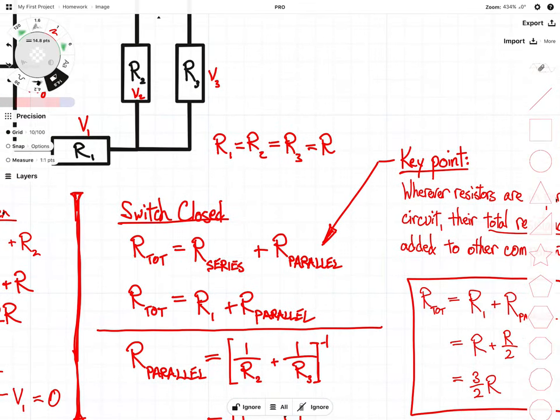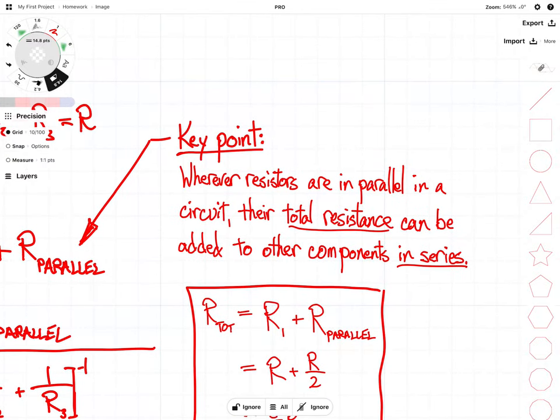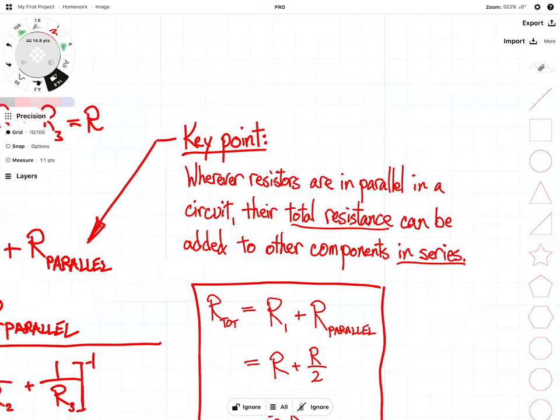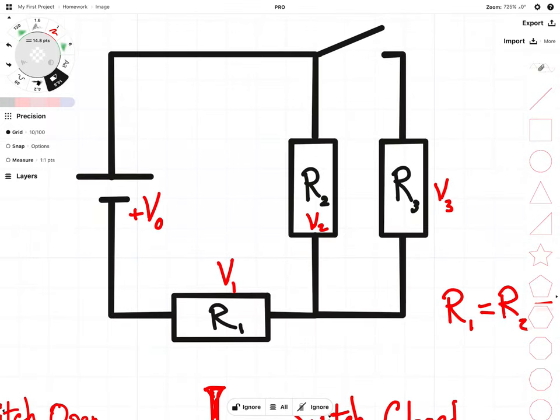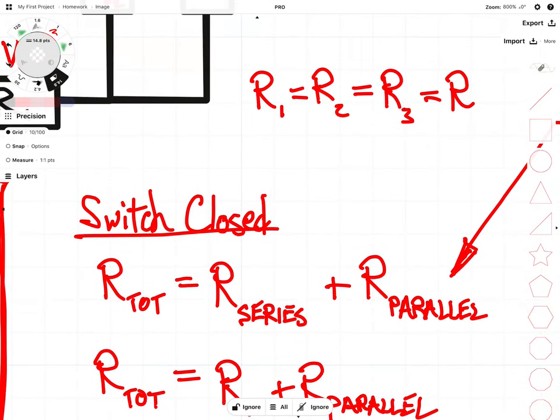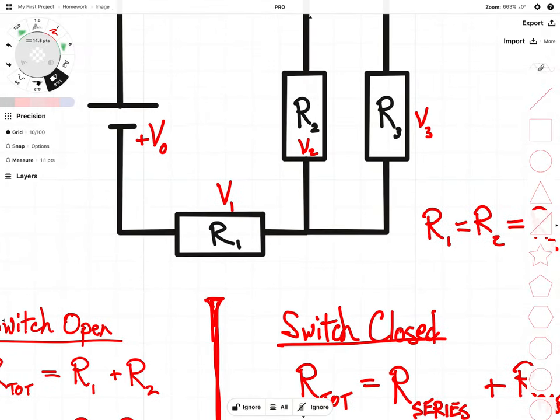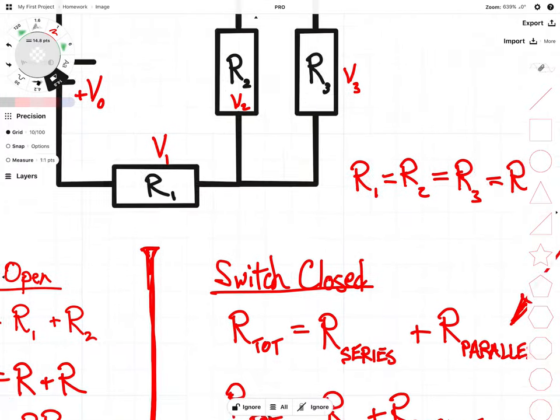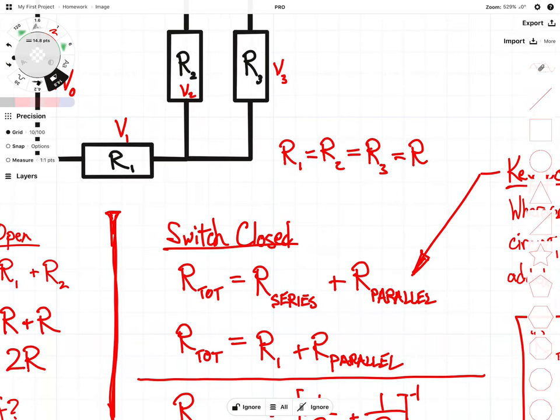Now we're going to take a look at the switch closed. So the key point here is wherever resistors are in parallel in a circuit, their total resistance can be added to the other components in series. Okay, so in other words, what happens is R2 and R3 here, we basically combine those into one kind of virtual resistor, and that virtual parallel resistor is in series with R sub 1. And what that looks like is our first equation here. So total resistance in this circuit when the switch is closed is going to be essentially equal to series resistance.